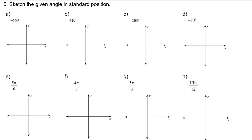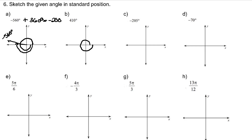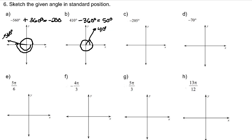Sketch the given angle in standard position. Negative 560 degrees is over a full circle in the negative direction. Adding 360 reveals it's further than a full circle by 200 degrees — 20 degrees further than 180. For 410 degrees, going in the positive direction past a full circle: subtracting 360 reveals it's 50 degrees further. The multiple circles drawn are absolutely necessary to show that 410 is coterminal to 50 degrees, but it is 410 degrees — 50 degrees more than a full circle.